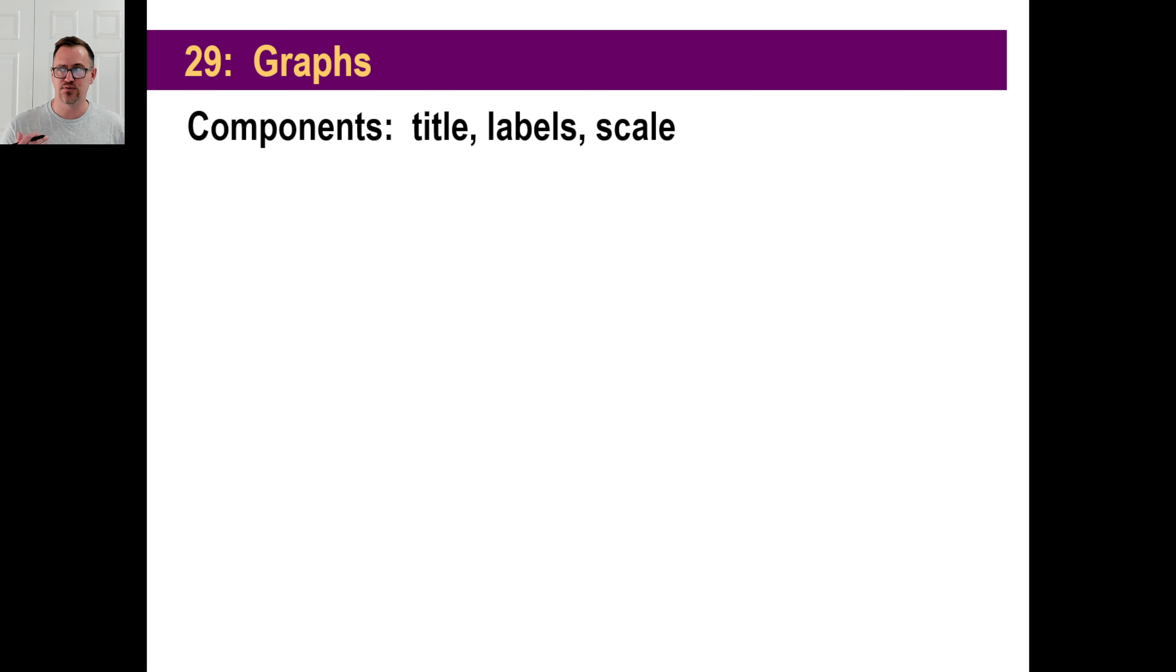A couple of components of a graph include the title, which tells you what the graph's all about, labels, which they will label the bottom and the side, and we'll look at a couple of those in a second, and a scale.